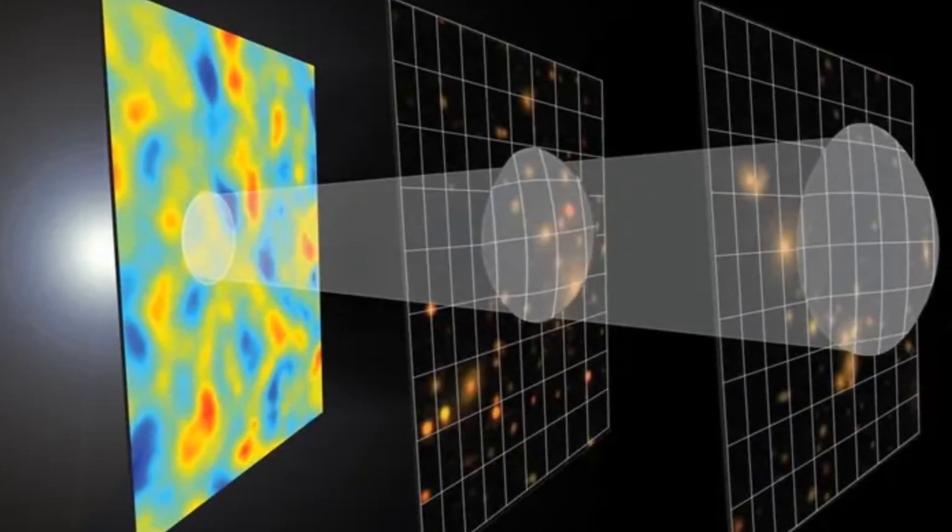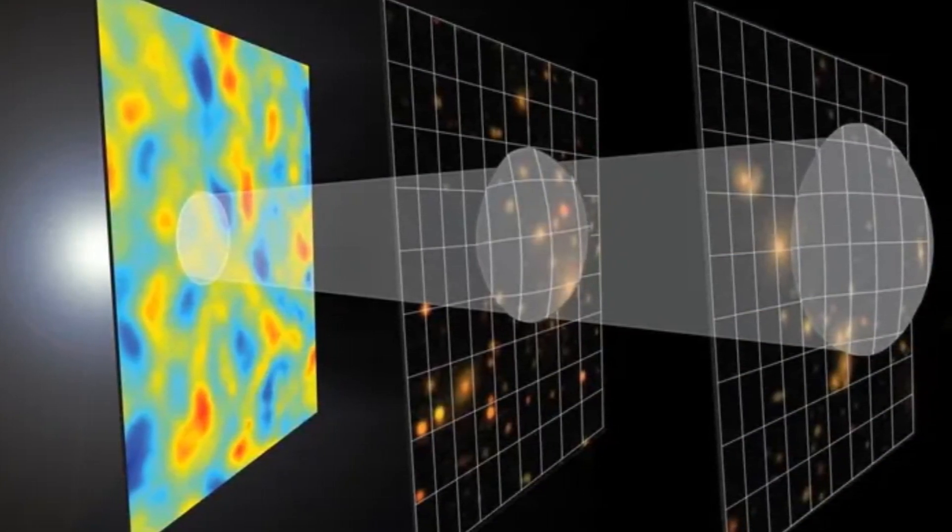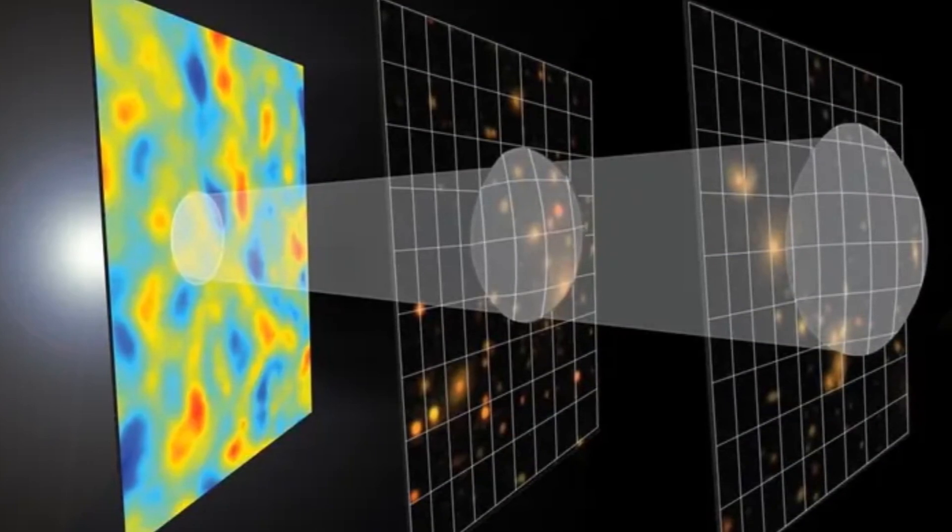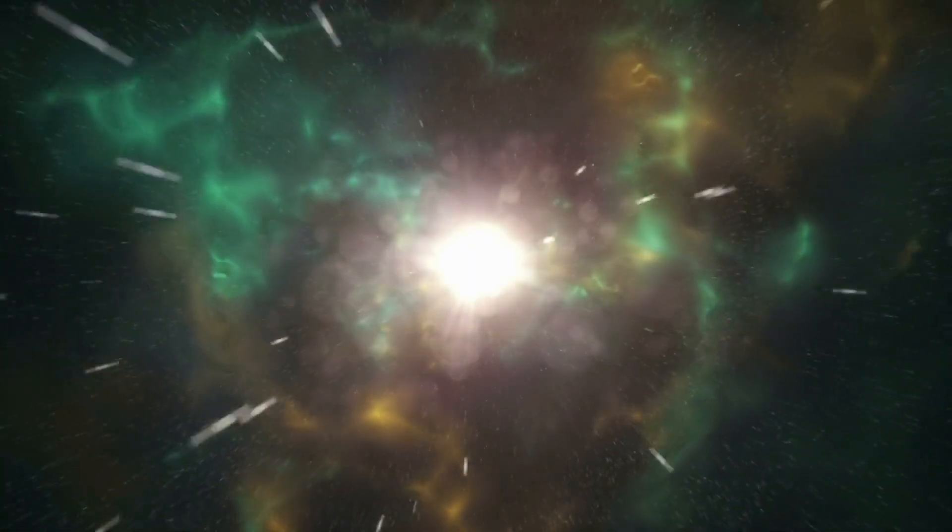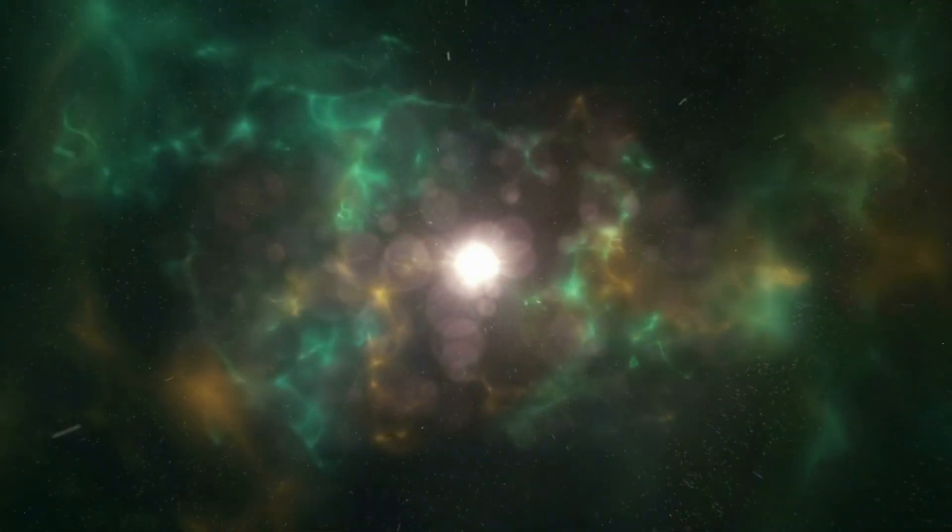Penrose's departure from the mainstream model introduces the idea that our universe might be part of a larger cycle. He suggests that the Big Bang did not create the universe from nothing, but rather it might be a result of the final stages of a preceding universe.